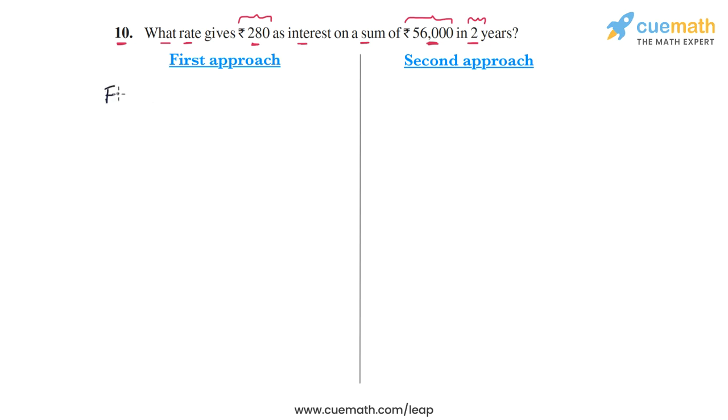From the question, we are given that for two years, the interest amount on the given principal is ₹280. So from this, we can write the interest amount for one year. What will be the interest amount for one year on the same principal? This will be simply ₹280 divided by two. So 280 divided by two is 140.